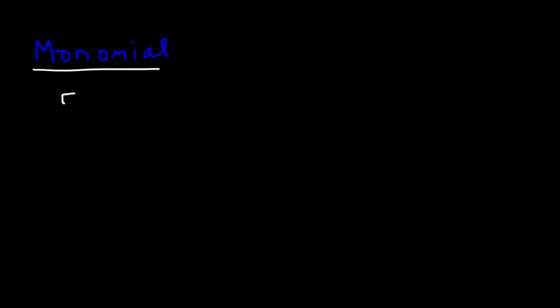What is the difference between a monomial, a binomial, a trinomial, and a polynomial? A monomial basically has one term. Examples of monomials are 5x, 3, 8x squared, 9x cubed. All of these are monomials — they have a single term. Mono means 1.